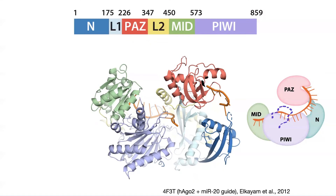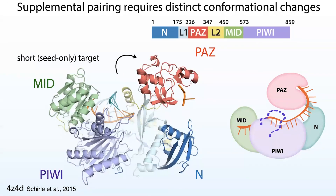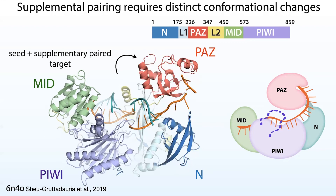In order to have further pairing, Ago is going to have to undergo conformational changes — it's going to have to shape-shift. It does this after you have that initial binding to the seed sequence. When bound to a short seed-only target, you can see movements of Ago, especially the PAZ domain, moving with the N domain in a hinge-like motion, opening up the RNA binding channel. This allows the RNA past the seed region to unkink, so you can get further binding. There's also a helix — helix seven — that helps interrogate the sequence and moves out of the way to open the channel and accommodate further supplemental region pairing.